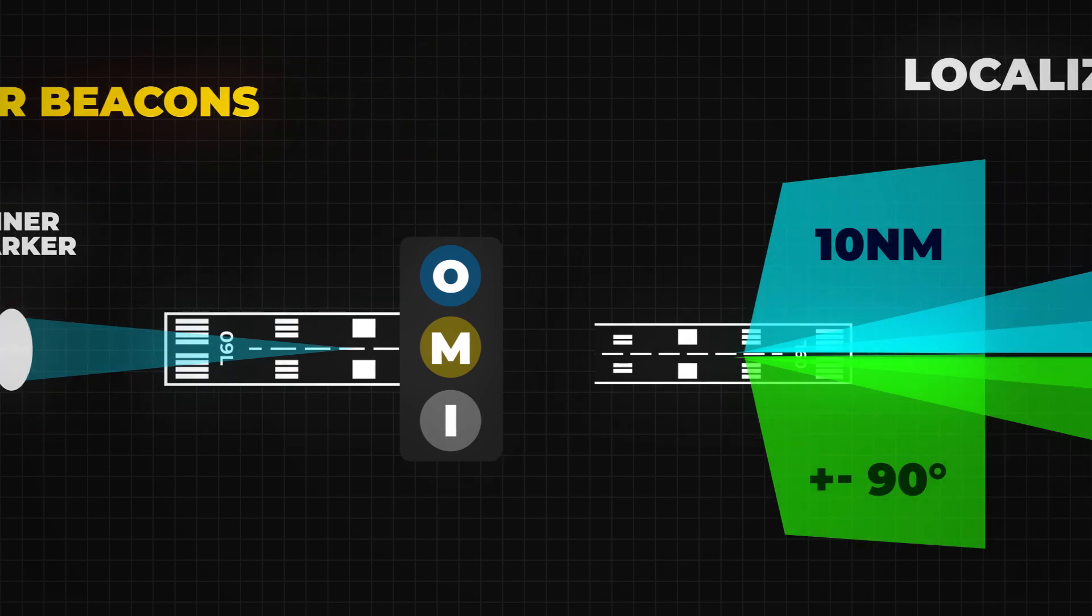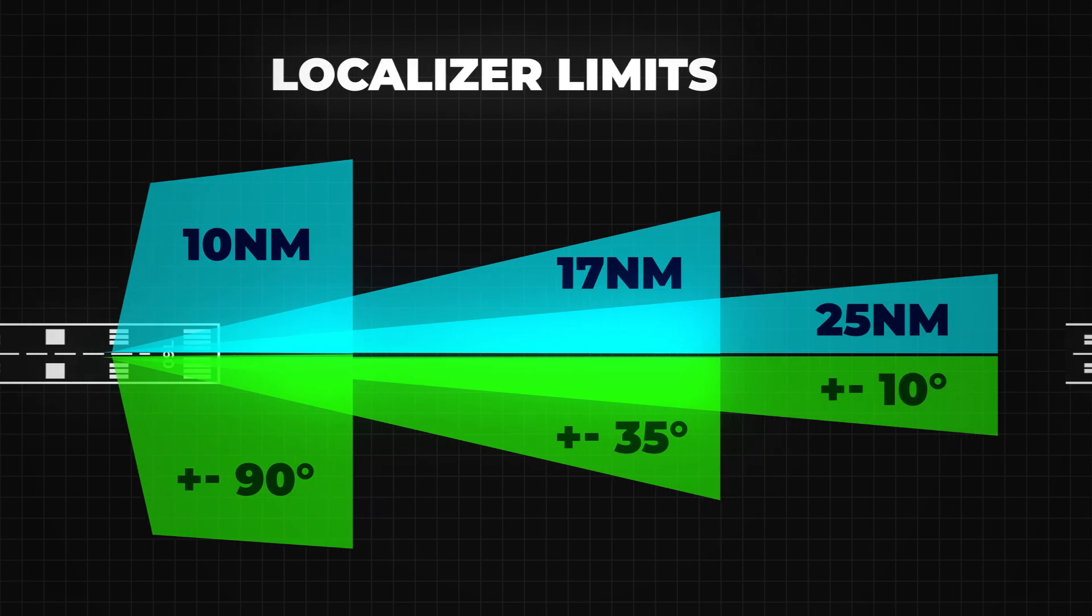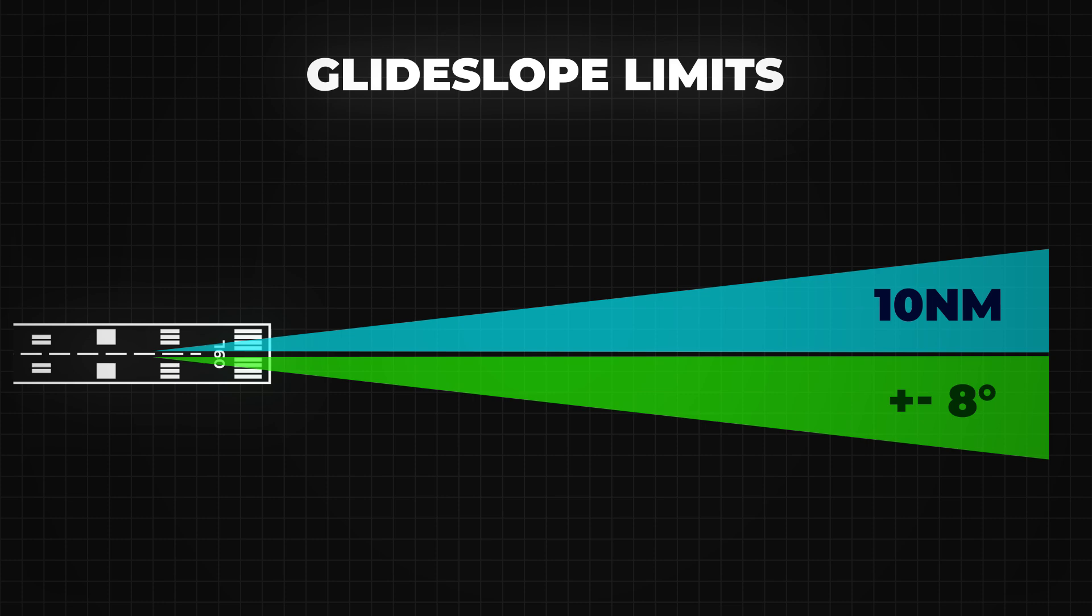One more thing. ILS coverage has limits. Generally, the localizer is reliable up to about 25 nautical miles within 10 degrees of the runway heading. The glide slope is accurate within about 8 degrees and up to 10 nautical miles out.